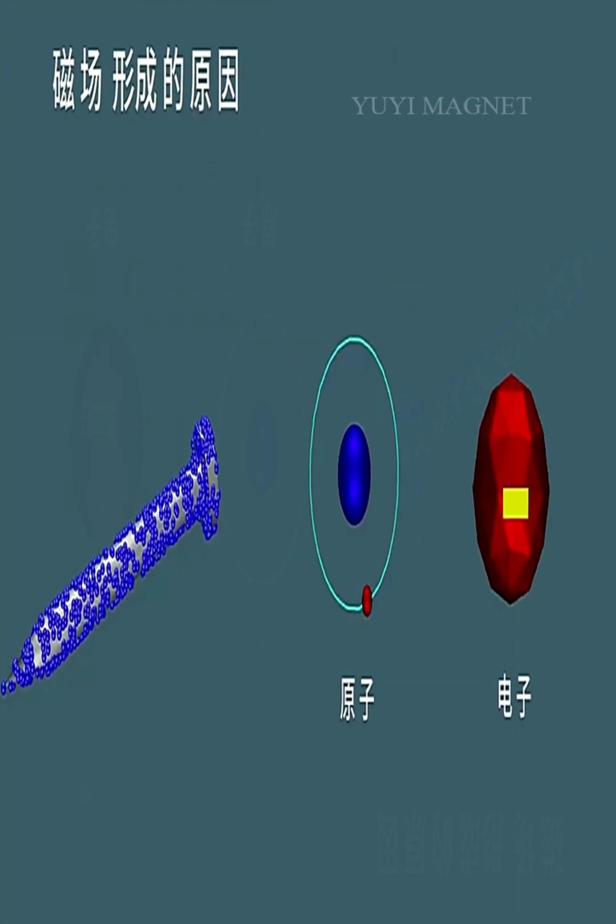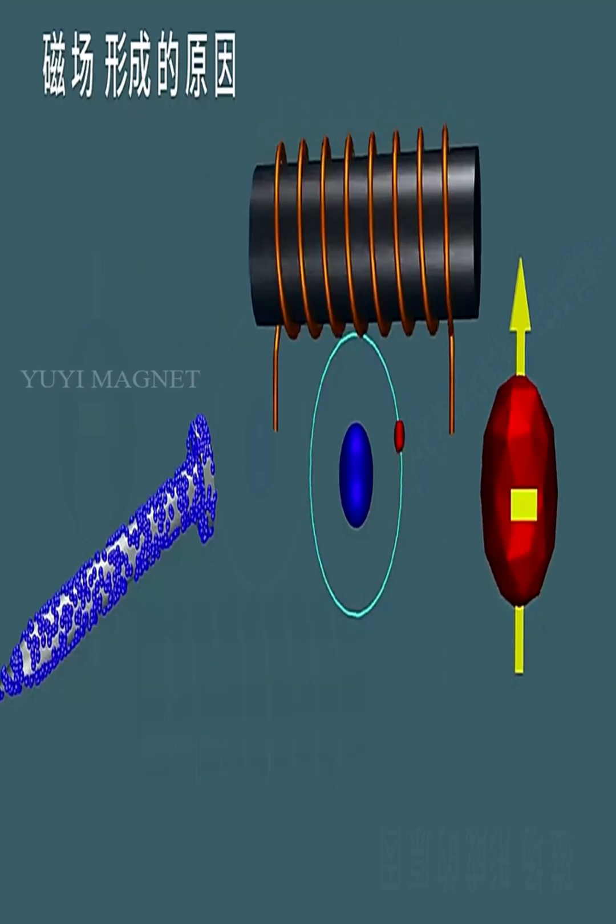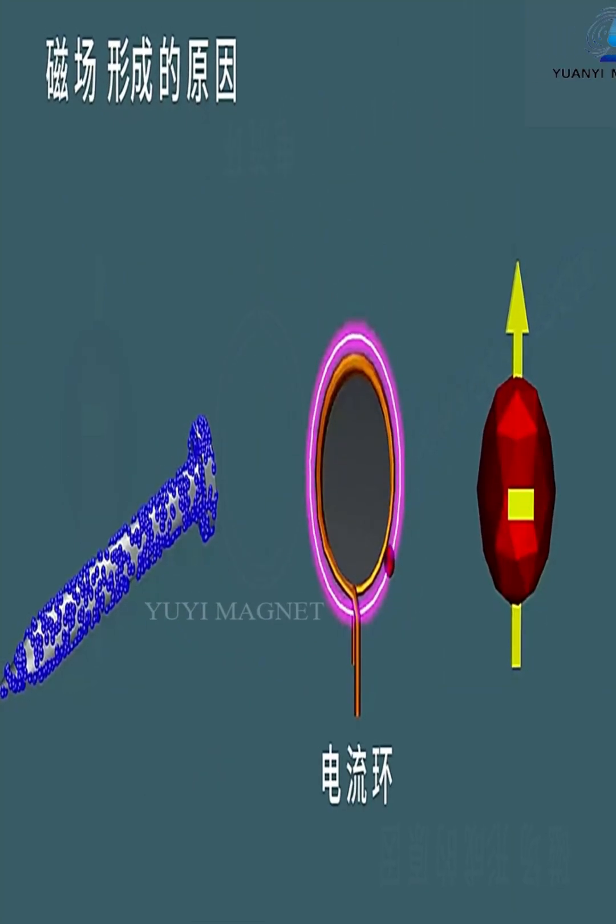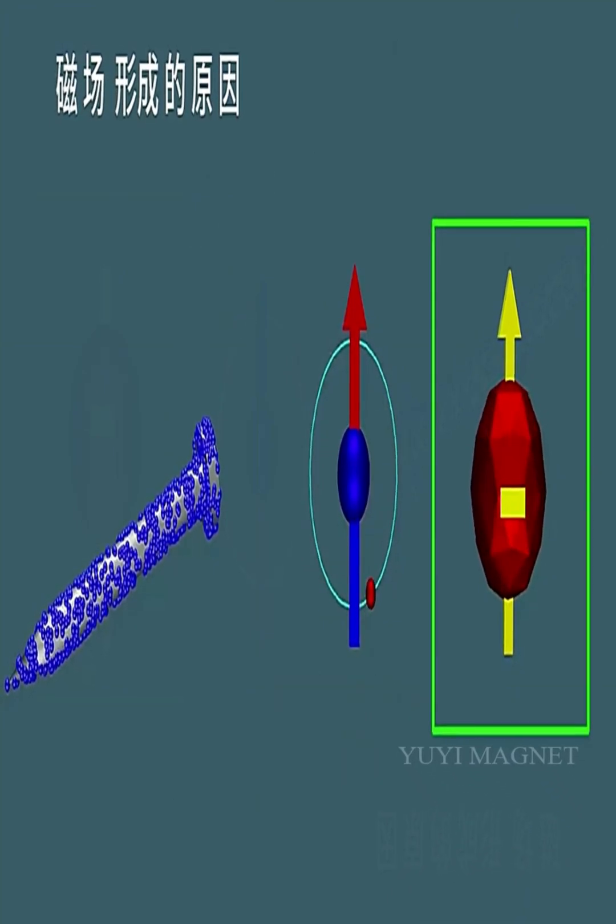Through artificial methods of magnetization, even without an external magnetic field's influence, permanent magnets retain their own magnetism.